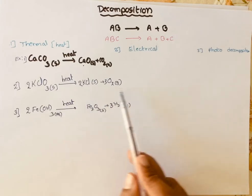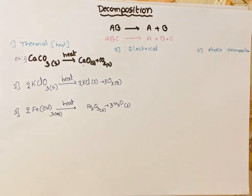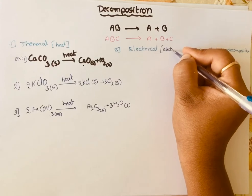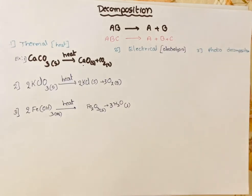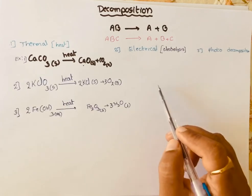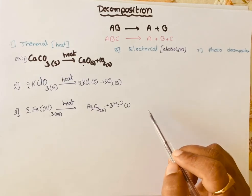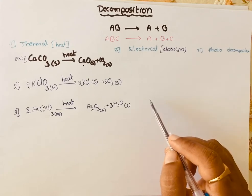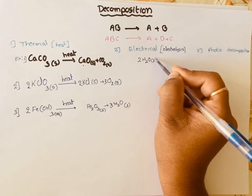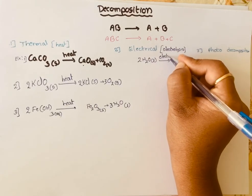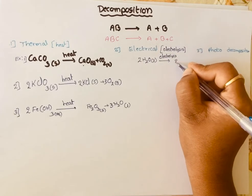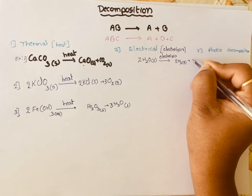Now let's see what electrical decomposition is. We can use electricity — the other name for this is electrolysis. We place electrodes in the solution of the compound we want to dissociate and pass electricity through it. Electricity plays the key role in dissociating the compound. For example, electrolysis of water: two moles of water, when an electric current is applied, undergoes dissociation into H2 plus O2.